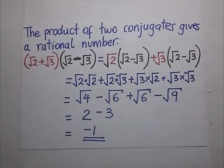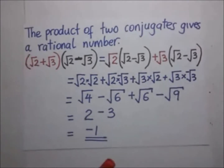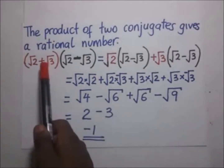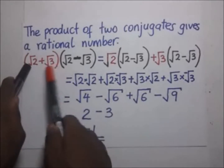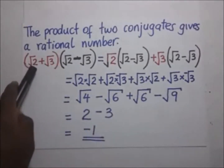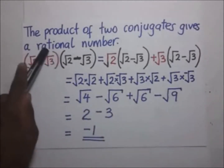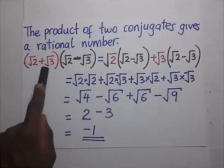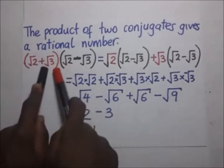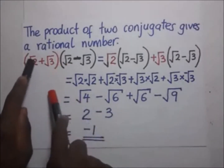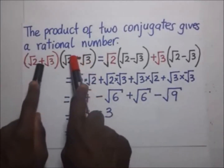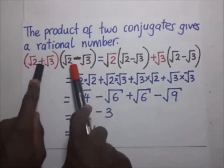Right here we have two surds. We have the original surd, which is root of two plus three, and we are required to rationalize this surd. In rationalizing it, we are supposed to multiply it with its conjugate. Its conjugate is going to be root of two minus three — that's the only difference.